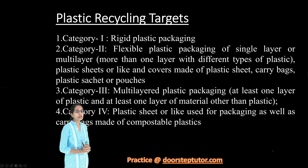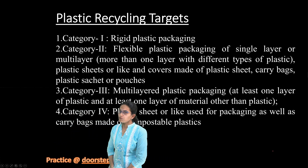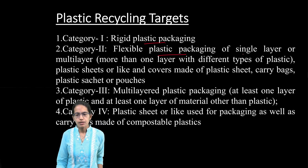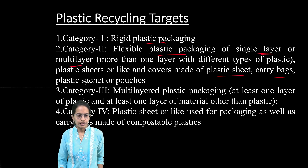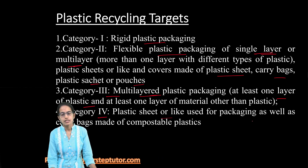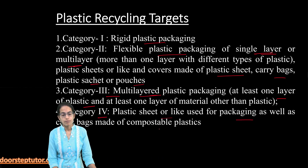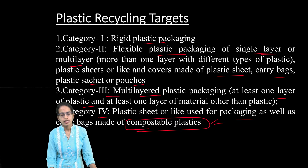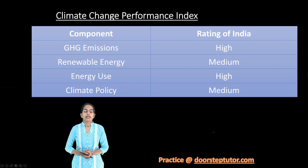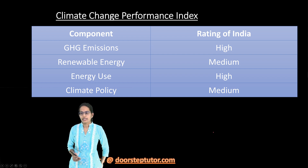For plastic recycling, four categories have been divided. Category one is rigid plastic packing. Category two is flexible packing of single layer or multi-layer — this could be plastic sheet, carry bag, sachet or pouch. Category three is multi-layer with at least one layer of plastic and other layers of different material. Category four is plastic sheet or carry bag made of compostable plastic. This topic could have a direct exam question.